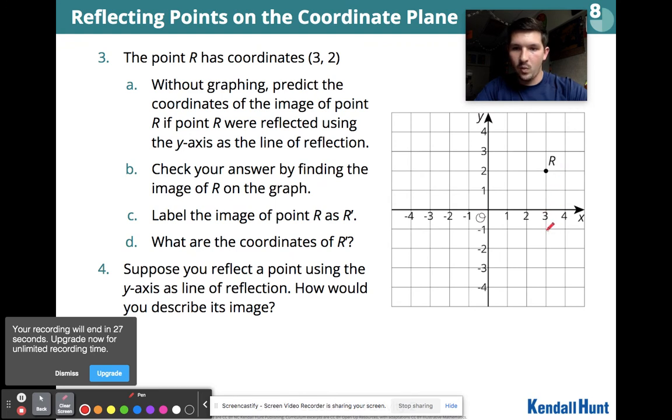1, 2, 1, 2. So it's going to end up here. That's R prime because it's our new image. Well, this is at 3, 2, and our new image is still at 3, but now it's at negative 2.